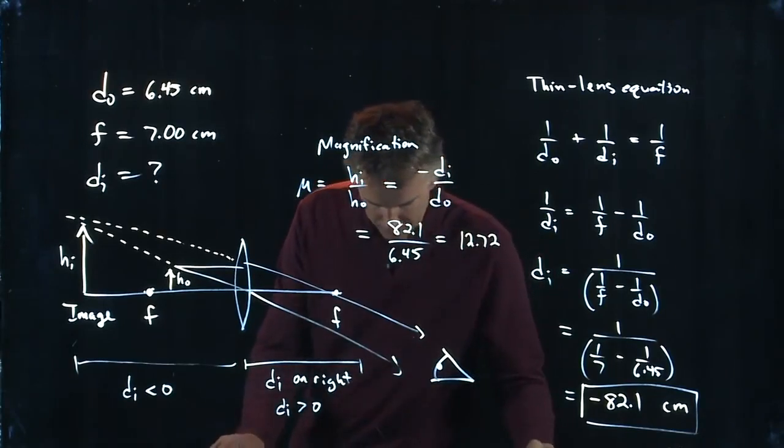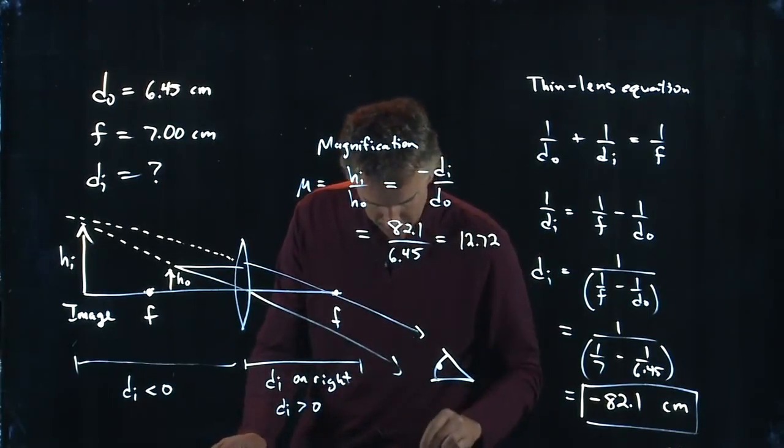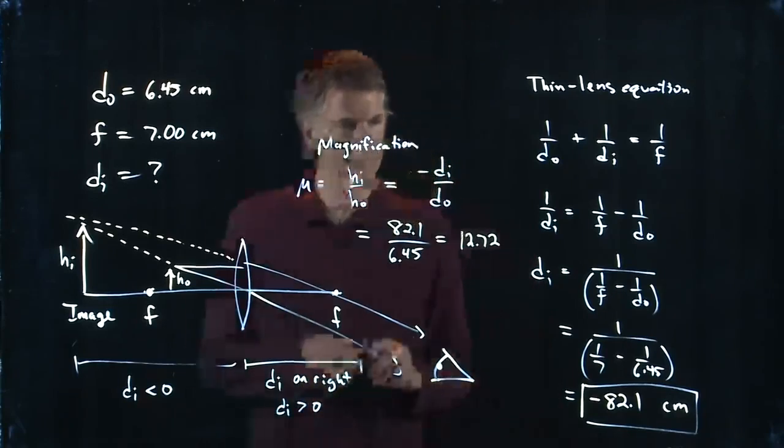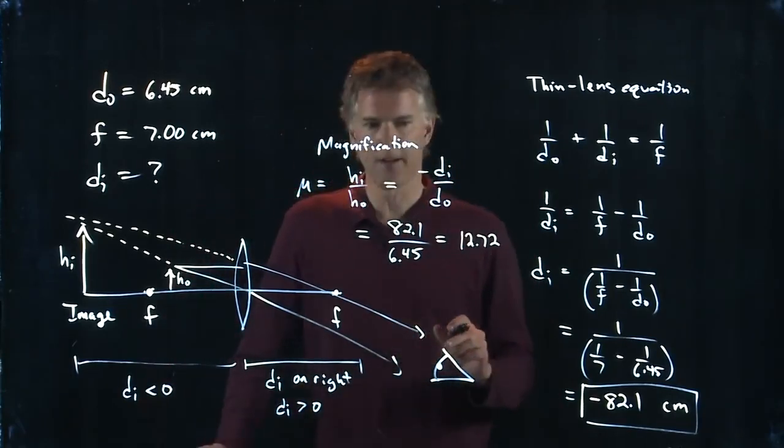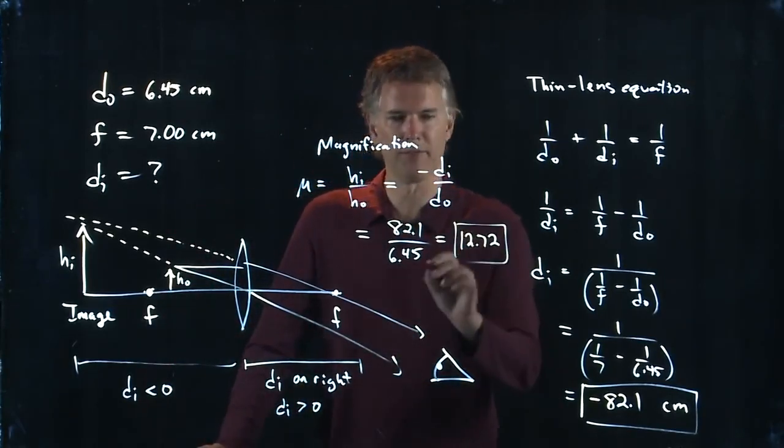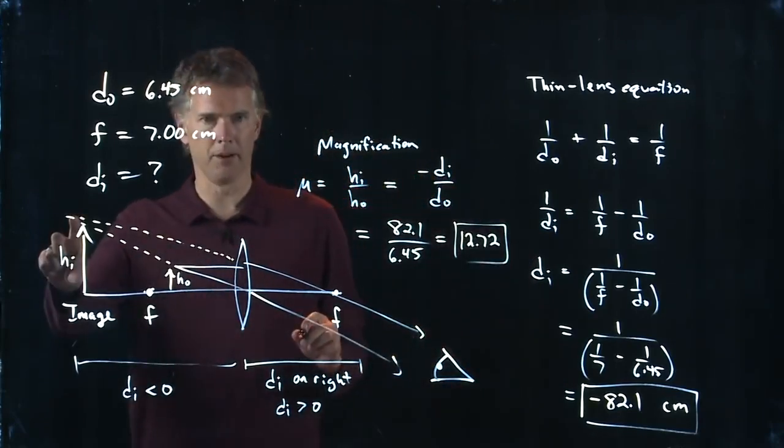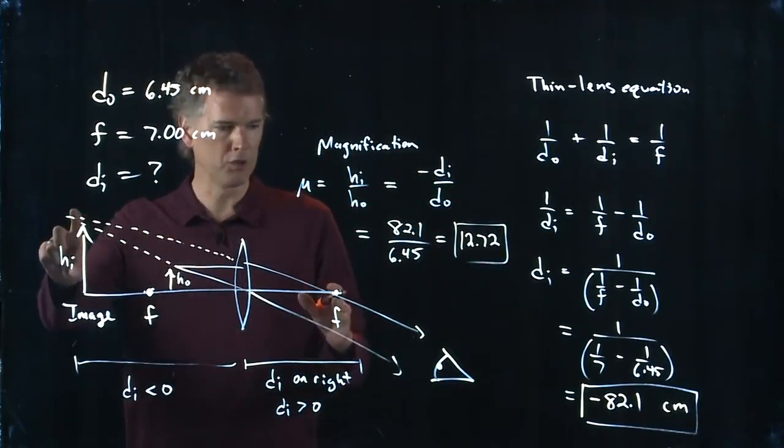Okay, I got 12.72. Yeah, it's a negative here because I forgot to add the extra negative sign. So let's just verify. Yeah. Okay, 12.72 for our magnification. We know it's got to be bigger, right? Clearly it looks bigger. 12 sounds like a reasonable number.